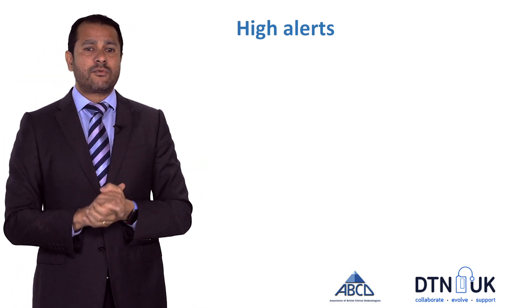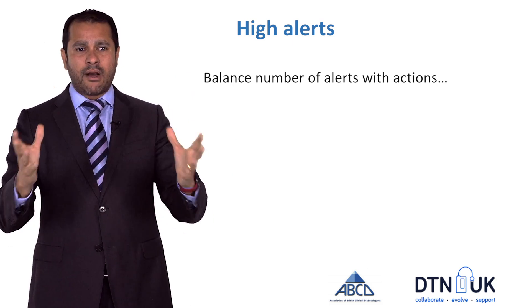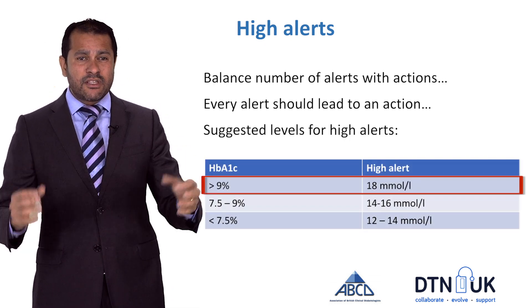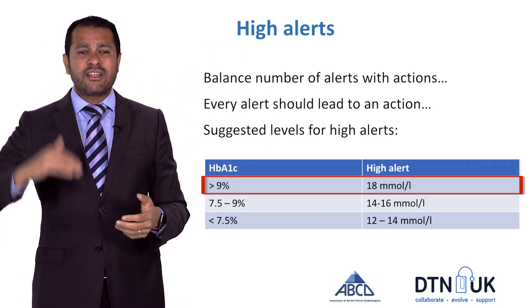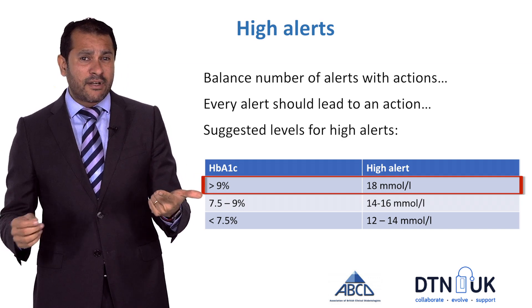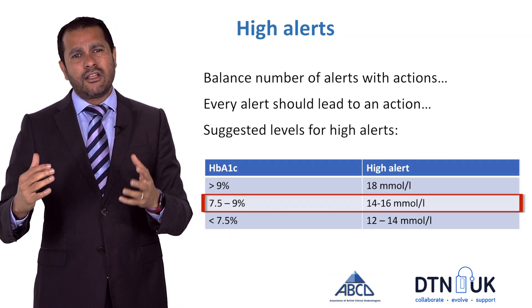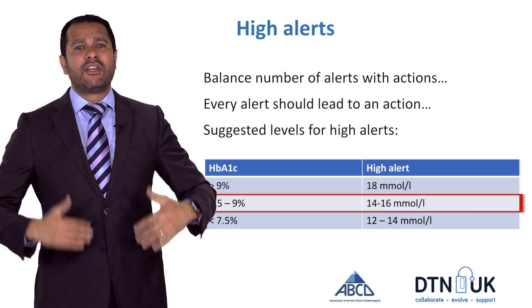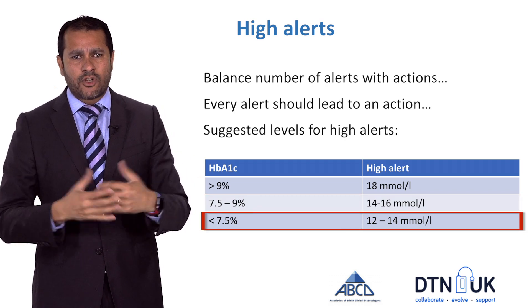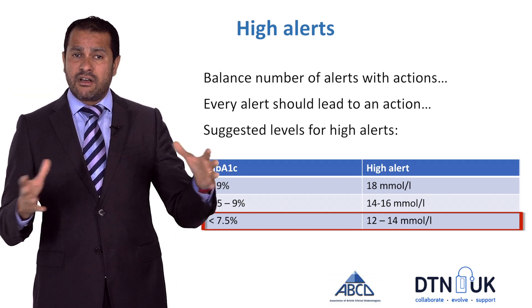It's also important to know where to set your high alerts. If you set that too low, you're going to get a lot of alerts and it'll just be beeping all the time. A phrase we use in our clinic is that every alert should lead to an action. If your HbA1c is over 9%, try setting it at 18 millimoles per litre — when it goes off, think about whether it's because you've treated a hypo, you're post-meal, or if there's a pump set problem. If your HbA1c is between 7.5 and 9%, the high alert might be better set at around 14 to 16. As the A1c drops down, you can drop that high alert down to between 12 and 13. The lower that high alert is, the lower your A1c is in general.